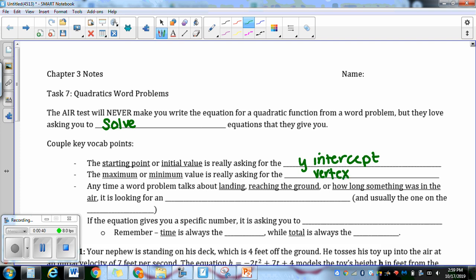Any time a problem talks about landing or reaching the ground or asking how long was something in the air, it is looking for an x-intercept. And what's more, it's usually the one on the right. It's usually talking about where it landed, so things move from left to right. So if you're talking about the landing point, that is the one on the right-hand side.